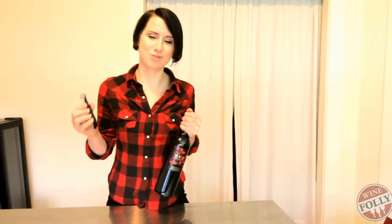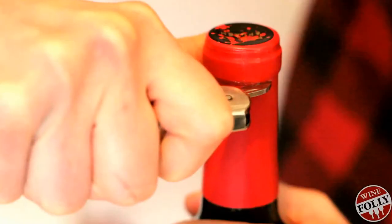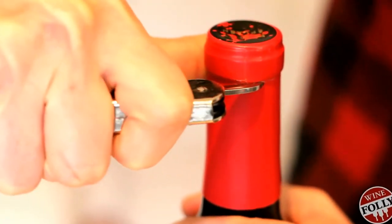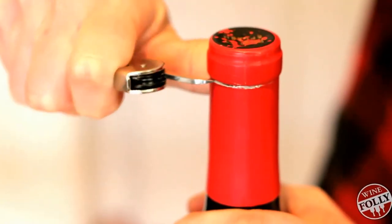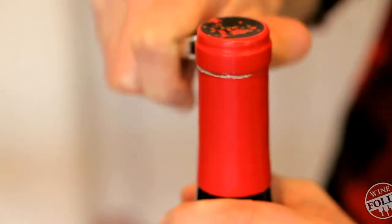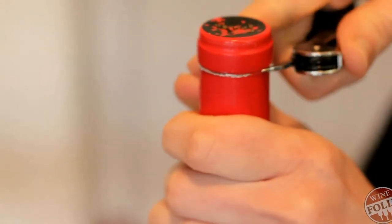I'm going to use this waiter's friend to open a bottle of wine. First, cut the foil. Once around the front, and once around the back.